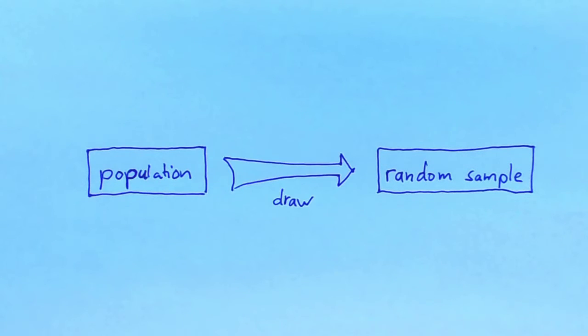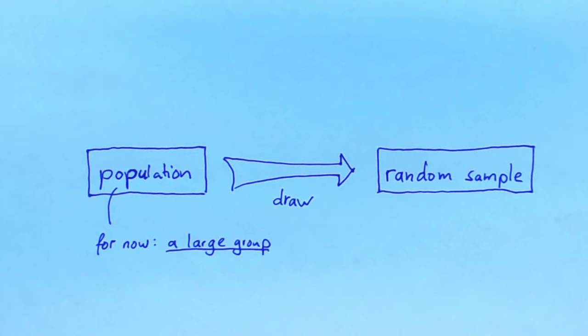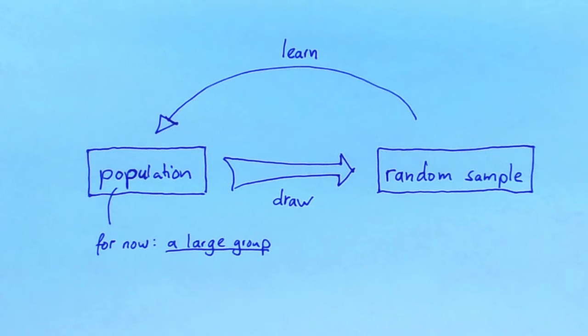We want to think about the process of drawing a random sample from a population. For now, we think of a population as a large group that, maybe because of its size, we cannot study directly. We want to use the random sample to learn more about the population. We are going to draw twice from the population — that is, we select two individuals from the population at random. We draw a sample of size n equal to 2 from the population.